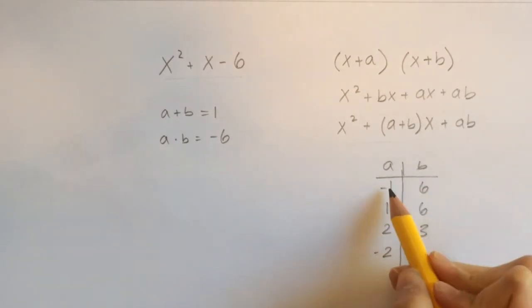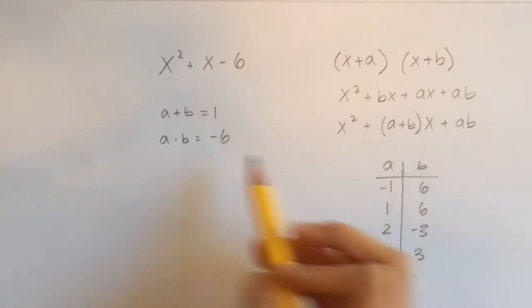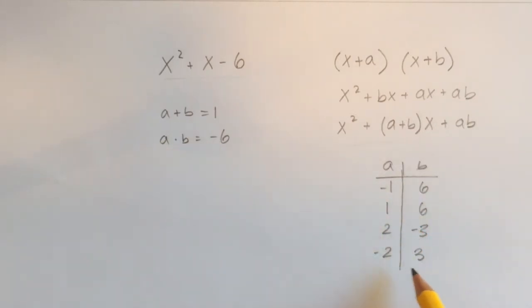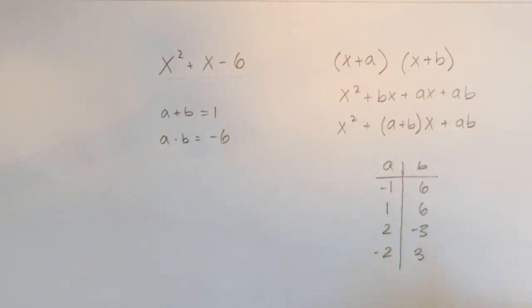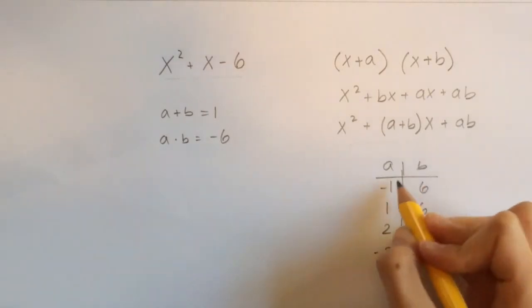Okay, so let's see. We know that all of these pairs of a and b will be equal to negative 6 when multiplied together, but there's only one pair here that, when added, will make 1. So let's see. Negative 1 plus 6. No, that is 5.